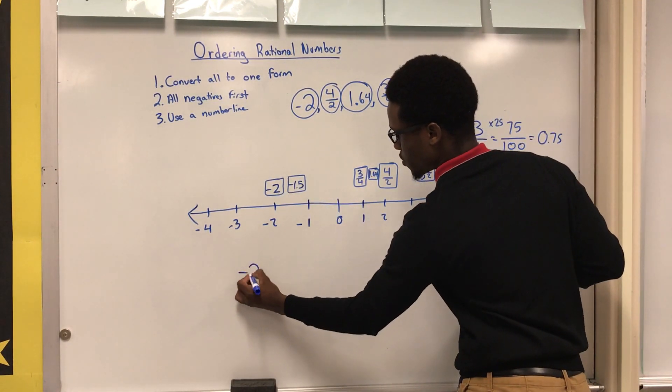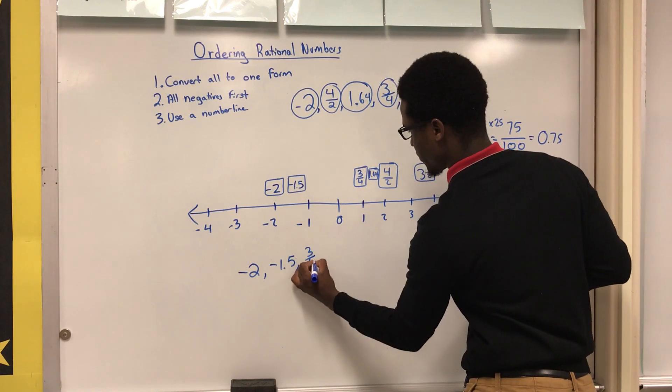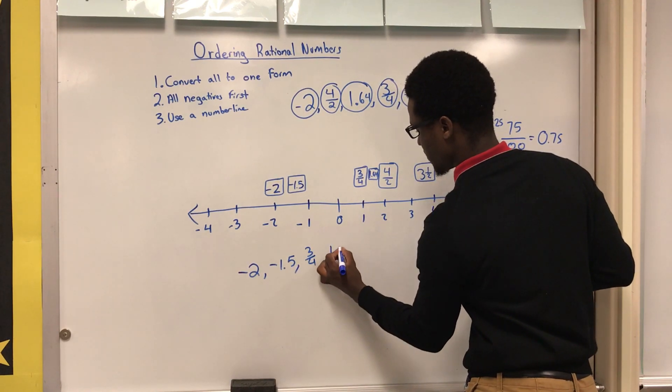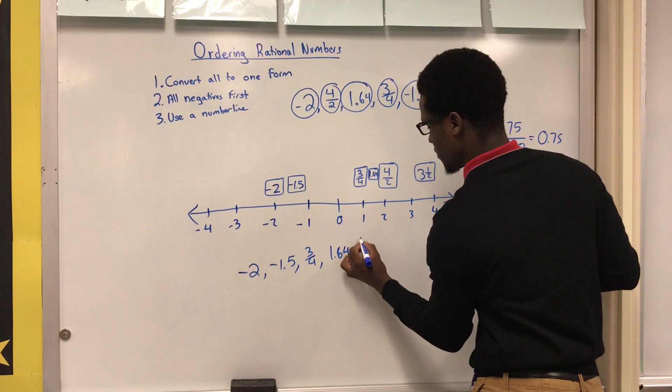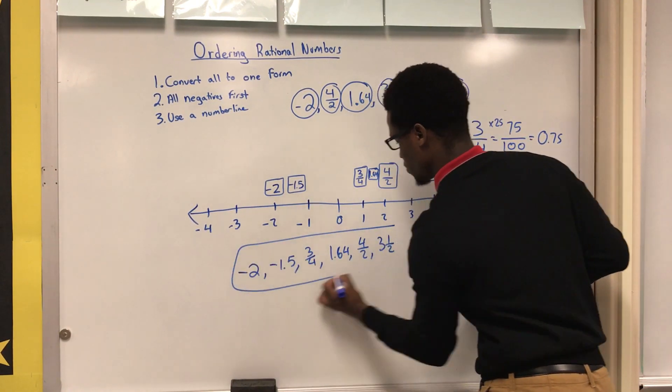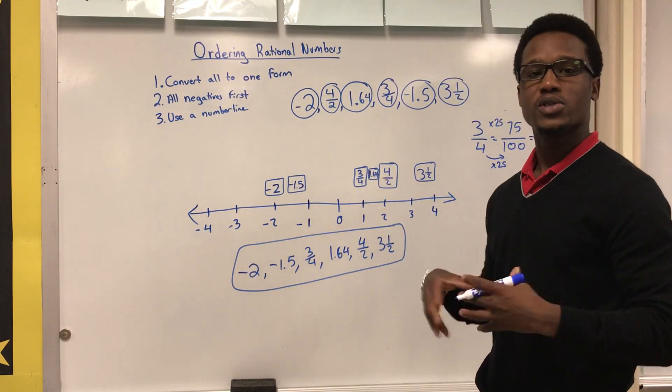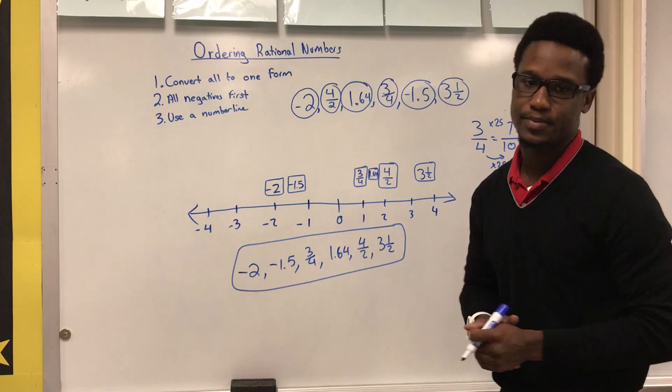So these numbers ordered is going to be: negative two, negative 1.5, three fourths, 1.64, four over two, and then lastly three and one half. This would be your answer. Okay, so as you can see, use number lines. They really help you out. Okay, that's it.